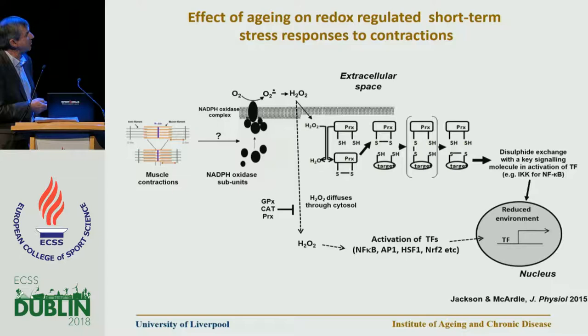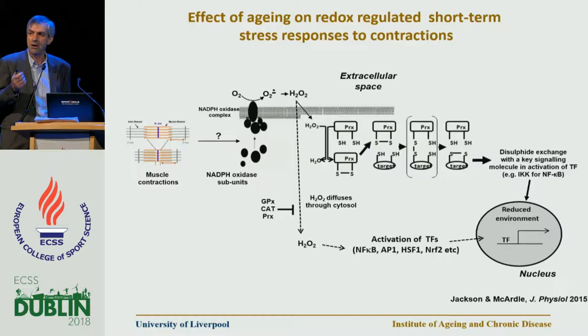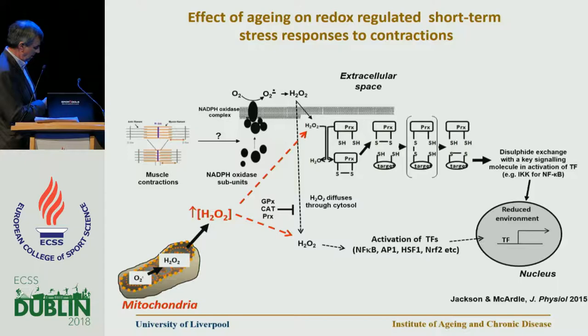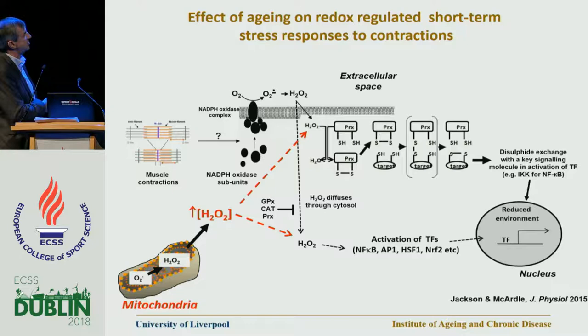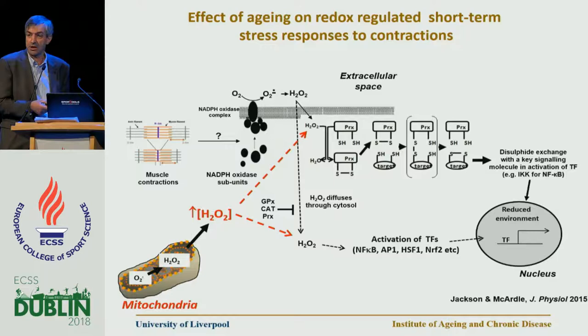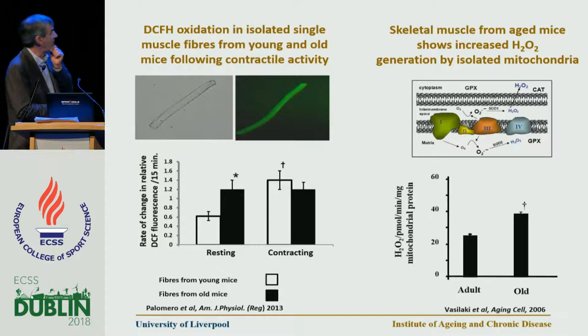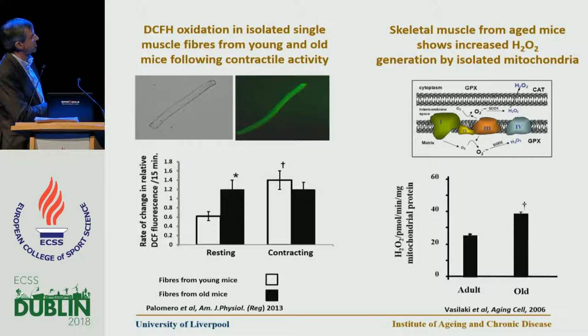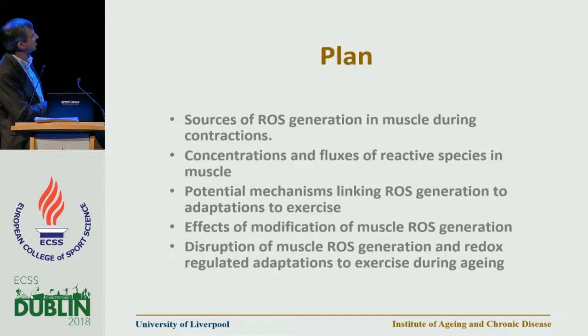What happens then with aging? During aging, mitochondria become relatively dysfunctional and start to generate hydrogen peroxide. Our hypothesis is that mitochondria chronically generating increased peroxide during aging lead initially to an over-activation of these pathways — such as chronic NF-κB activation — and then eventually to a failure of the ability of these pathways to respond to contractions. This is supported by work from Aphrodite Vasilaki showing elevated mitochondrial peroxide generation in isolated mitochondria from aged muscle fibers.